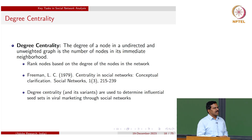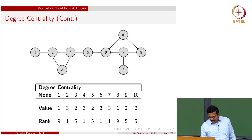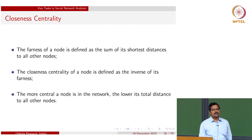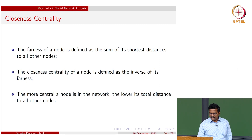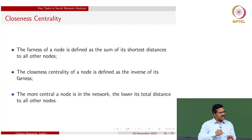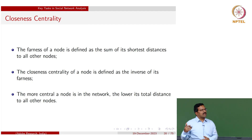Closeness centrality is the inverse of the farness of a node. You take a node, calculate the shortest path distances from it to all remaining n minus 1 nodes, take the sum of all such shortest path distances, and then take the inverse of that. For example, for node 5 in our running network, if the sum of all shortest path distances is 19, then its closeness centrality is 1 over 19.